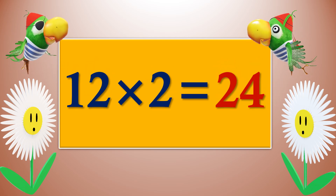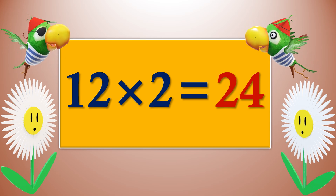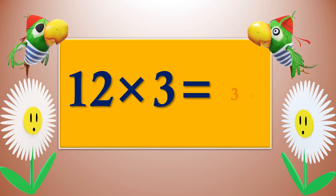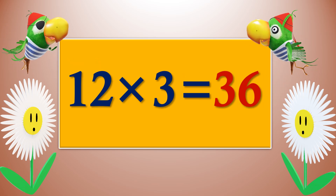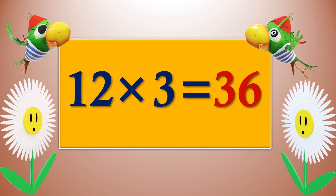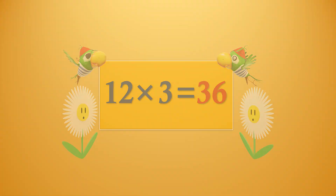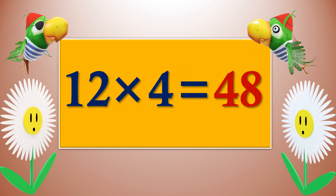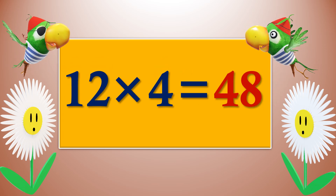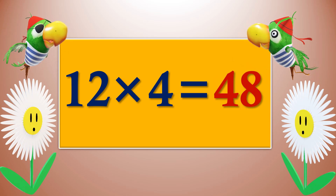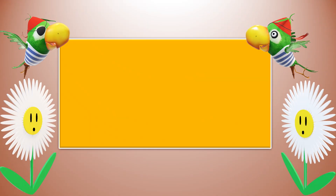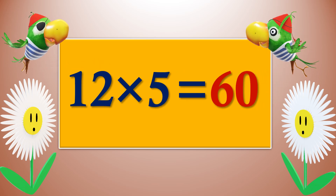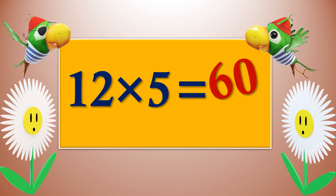Twelve threes are thirty-six. Twelve fours are forty-eight. Twelve fives are sixty.